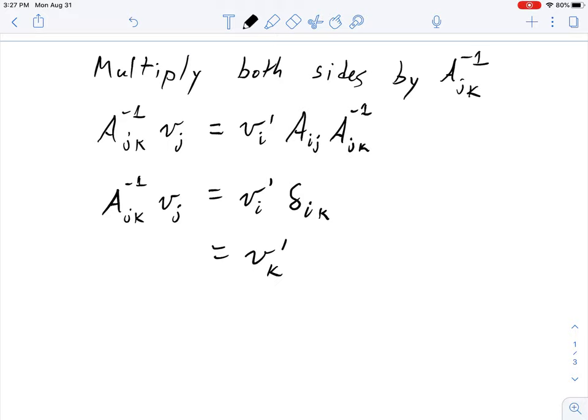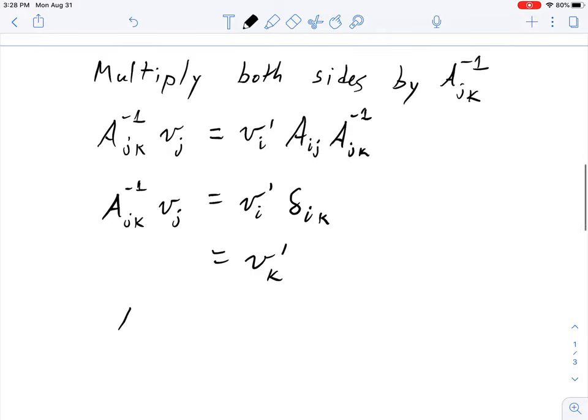This is already complete now, but usually conventionally we tend to like i to be the free index if there's going to be one. We kind of like i, j, k, etc. to be the free indices. For me at least it makes it easier to avoid making mistakes, so we'll just switch out k for i in this whole expression. So we have a inverse ji vj equals vi prime.